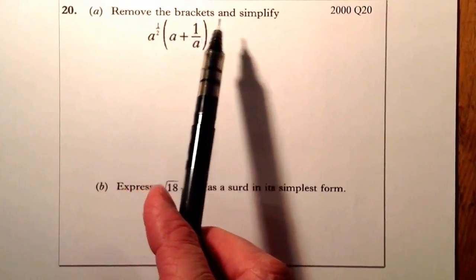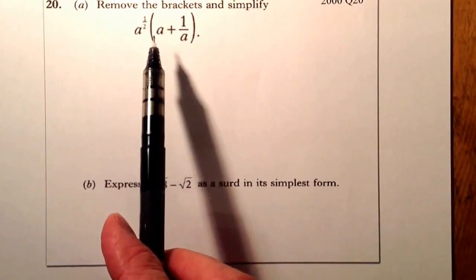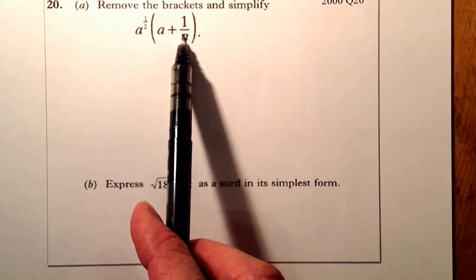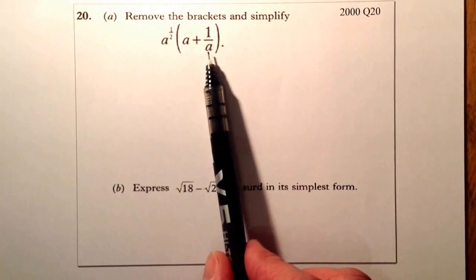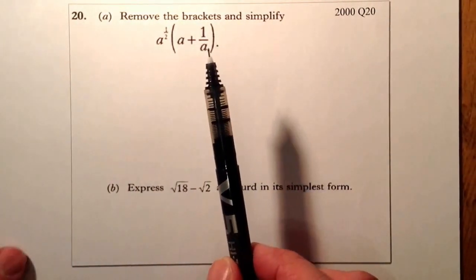So we've got Remove the Brackets and Simplify. So I've got some indices here, and I've got a fraction at the back here. So what I'd like to do with this one here, I'm going to change this one into index form.